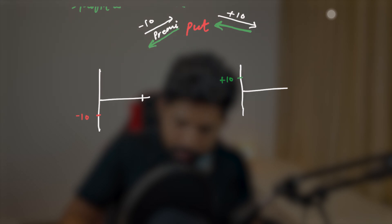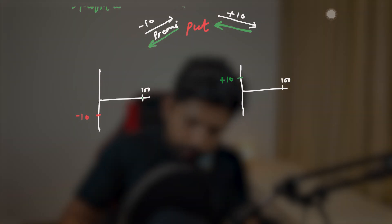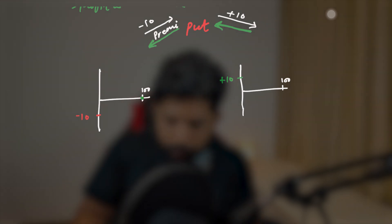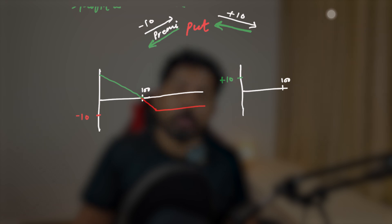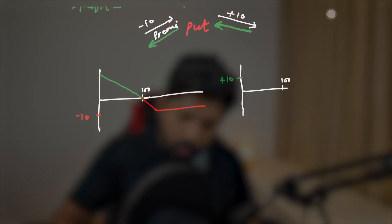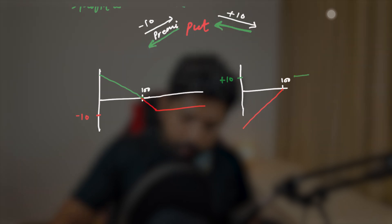In the put option, we are betting that if the price decreases, we will be in benefit. The put option buyer will be in benefit if the price of the underlying decreases, while the put option seller will be in negative if the price of the stock is decreasing. Let's say the strike price is $100. If you bought the put option and the price is decreasing, then you will be in benefit. Below this you will be in a capped loss equal to the premium. For the option seller, if the price is decreasing, he is in loss, and if the price is increasing, he will be in the capped profit of plus $10.